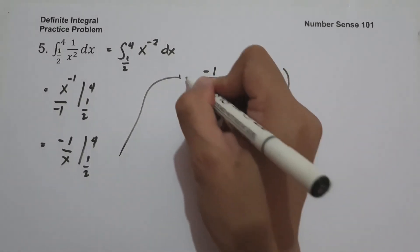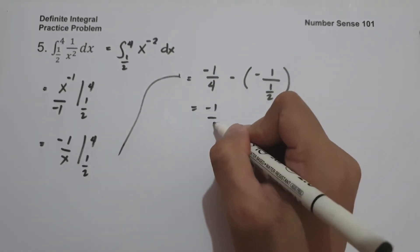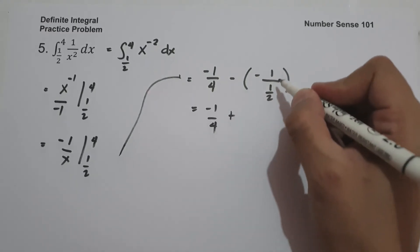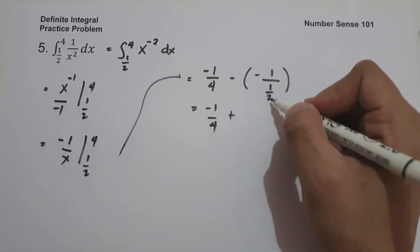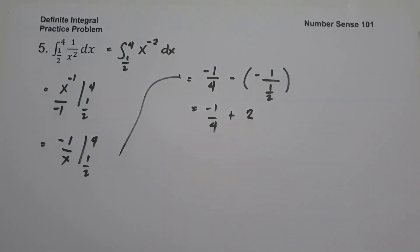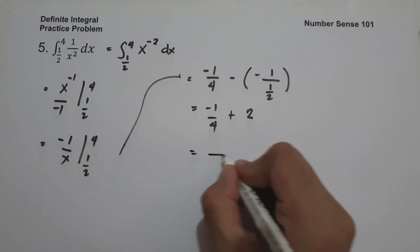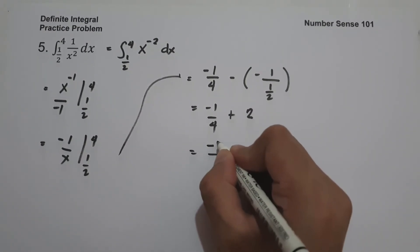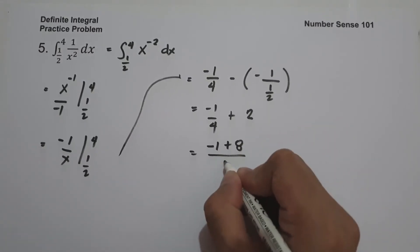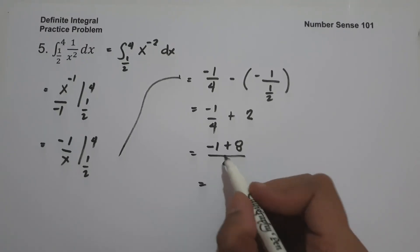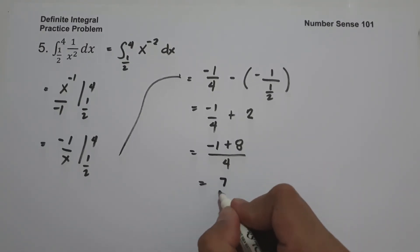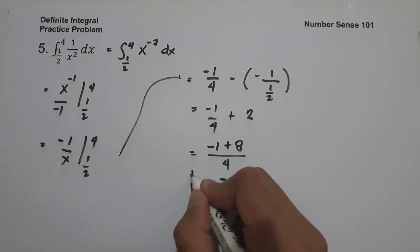This gives negative 1/4, and since negative times negative is positive, 1 divided by 1/2 is 2. So we have negative 1/4 plus 2. Converting 2 to fourths gives 8 over 4, so negative 1 plus 8 is 7 over 4. This is our answer.